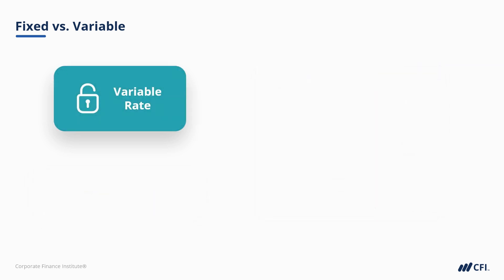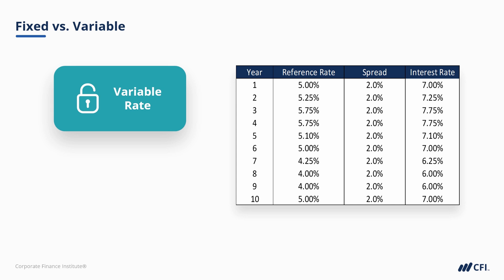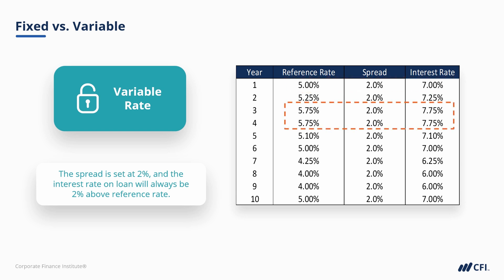Now let's look at a variable rate loan. You can see in the chart that the interest rate on the loan follows the reference rate, and the difference between the two lines remains the same over time. Looking at the table, that difference is called the spread — set in this example at exactly 2%. When the underlying reference rate is 5%, the all-in client rate on this loan is 7%. When the reference rate moves to 5.75%, after adding the 2% spread, the all-in client rate becomes 7.75%, and so on.